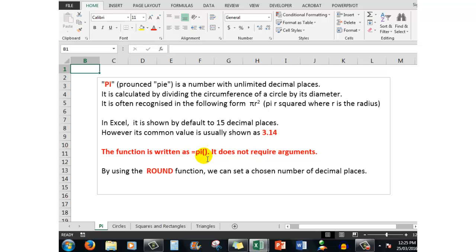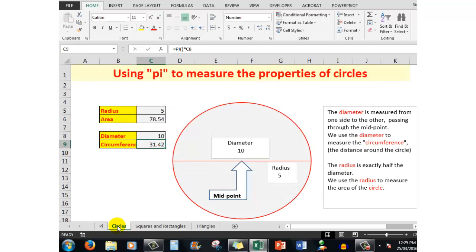So having looked at the background of pi, let's look at how I can use it to calculate the area of a circle. This particular circle has a diameter of 10, measured from one side to the other passing through the midpoint. We use the diameter to measure the circumference, which is the distance around the circle. The radius is exactly half the diameter, and we use the radius to measure the area of the circle.